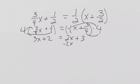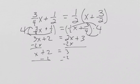So, let's take away two x from both sides, and we get x plus two equals three. Then, we subtract two from both sides, and we get x equals one.